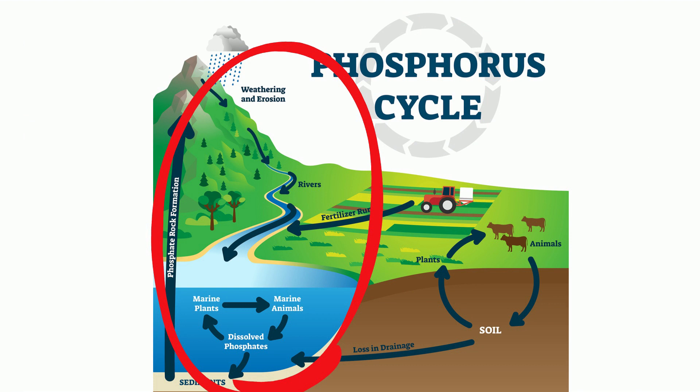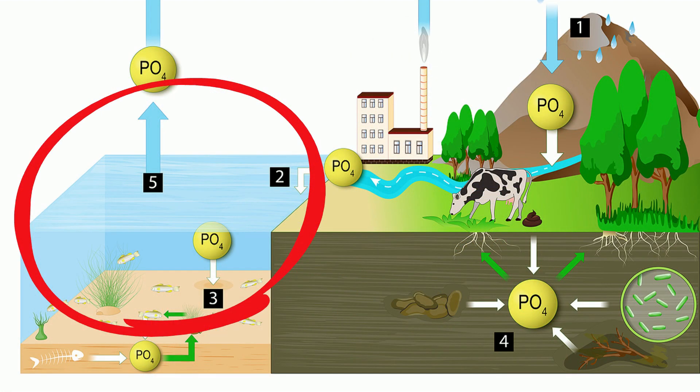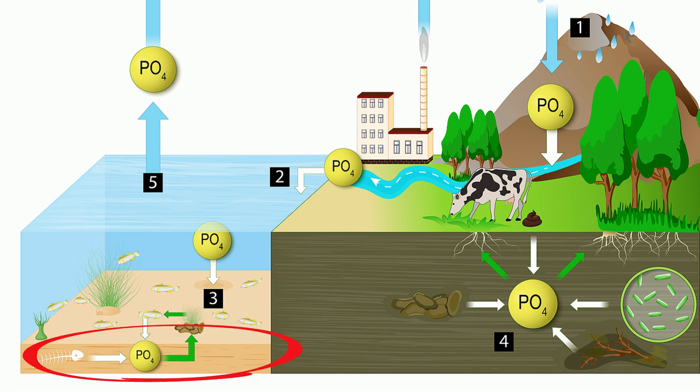Phosphorus-containing compounds may also be carried in surface runoff to rivers, lakes, and oceans, where they are taken up by aquatic organisms like phytoplankton. When phosphorus-containing compounds from the bodies or wastes of marine organisms sink to the floor of the ocean, they form new sedimentary layers.